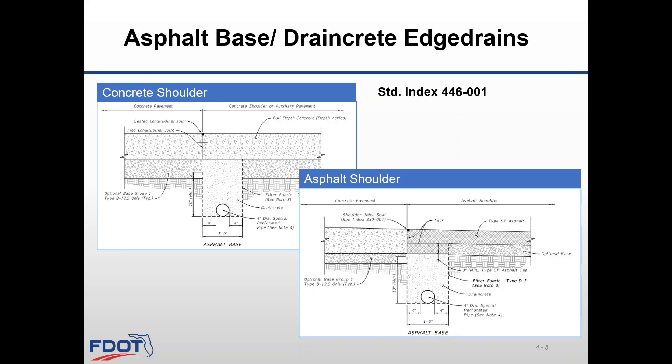The details shown on standard plans 446-001 for asphalt base show a typical layout of concrete pavement with tied concrete shoulder. It also shows how the drain crete edge drains are placed with regards to the mainline and the shoulder, and the diagrams include the longitudinal joint and seal. This index also shows the layout for concrete mainline with asphalt shoulder and how the drain crete edge drains are shown on the shoulder joint seal.